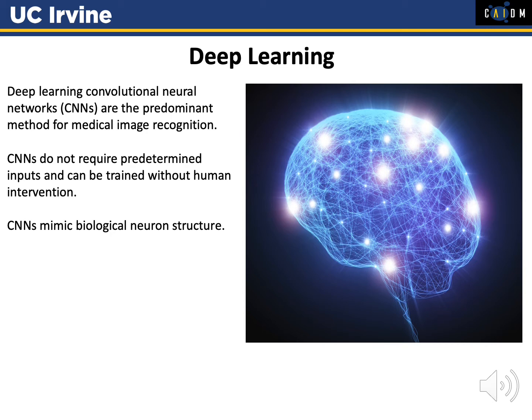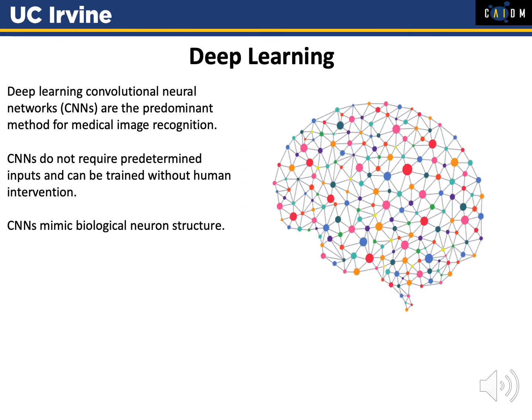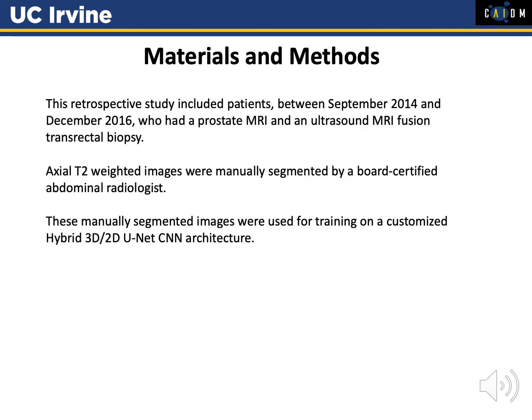This step could potentially be automated with deep learning. Convolutional neural networks are the dominant way that images are currently recognized on MRI automatically. CNNs don't require any predetermined inputs, they can be trained without human intervention, and their design mimics actual biological neuron structure.